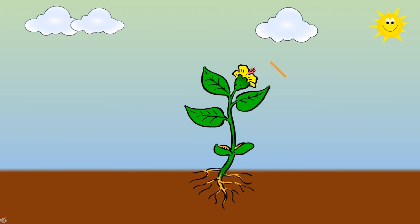A bud blooms into a flower. So, children, here we can see a beautiful flower on the plant.